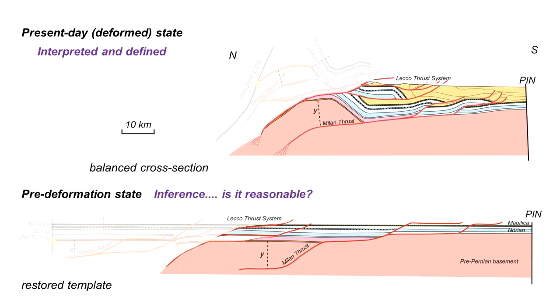So the top diagram is interpreted and defined, the pre-deformation state is the condition that is inferred from the top diagram and in order to claim that the top cross section is balanced we have to ask if the pre-deformation state is reasonable.